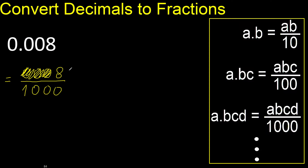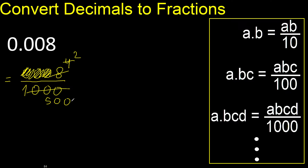One, two, three. This can be simplified because it can be divided by the same number. Divided by two: four divided by two is two, five hundred divided by two is two hundred fifty. Divided by two again: can be divided by two — one divided by two, finish simplifying.